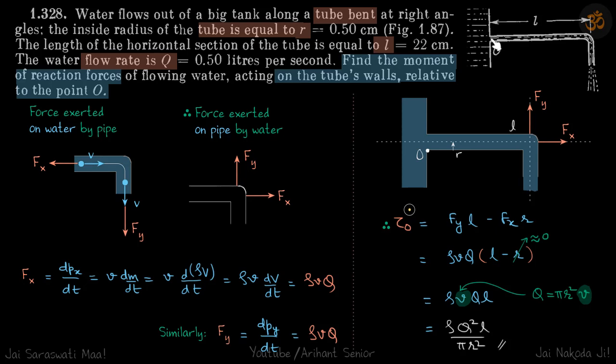You can see that this water which is going in a straight line suddenly turned towards the bottom. That means a force is exerted on the water in downward direction. So reaction force must be applied on this tube in upwards direction. So that upward force will cause a torque about point O, and that is what we need to find.